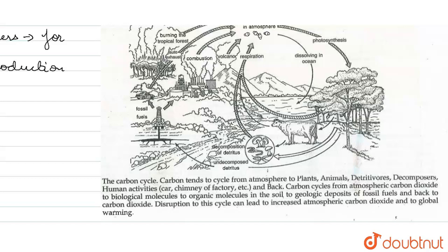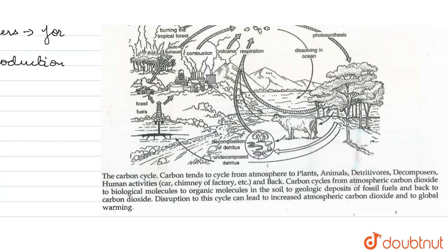If this cycle is disrupted, the concentration of carbon dioxide will increase in the atmosphere. Increased atmospheric carbon dioxide leads to global warming.